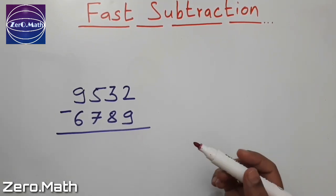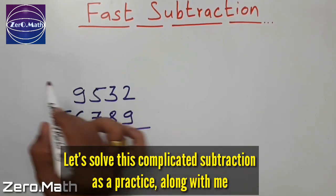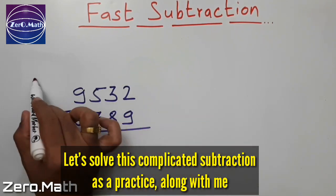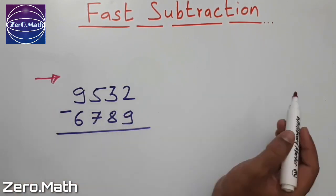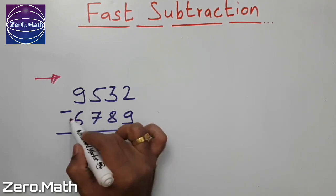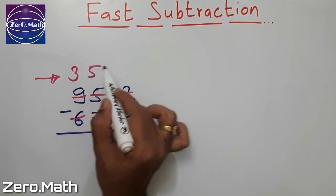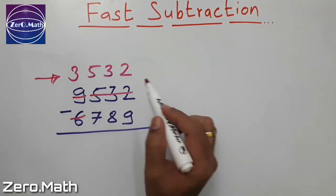Let us take complicated example and subtract 6789 from 9532 using fast subtraction trick. Again we will perform the subtraction from left to right. My leftmost digits are 9 and 6. Perform subtraction of 9 and 6, which is equal to 3. Note down this 532 as it is.